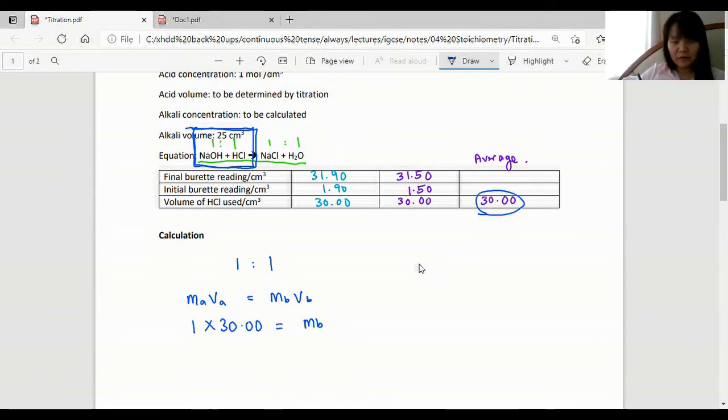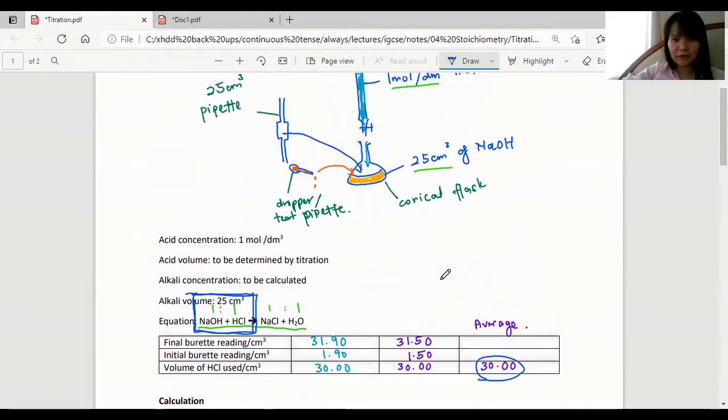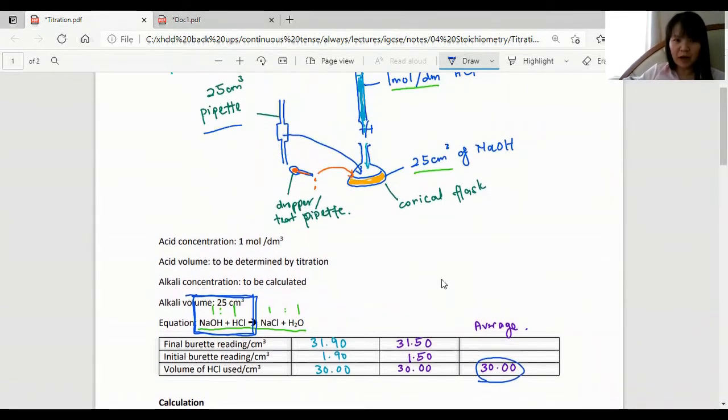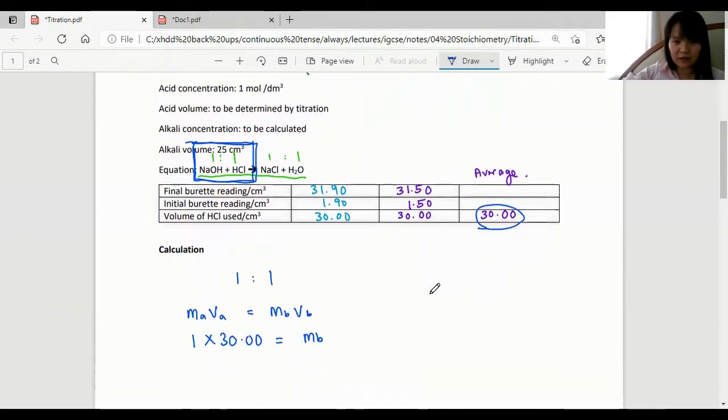And V acid would be our titration reading. M base is what we're looking for. And V base is how much base did we use, which is 25 centimeter cubes from the pipette that we put into the conical flask.